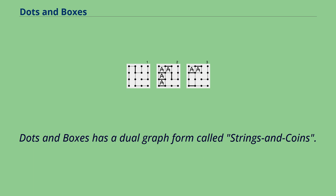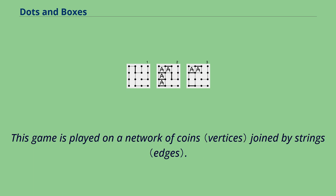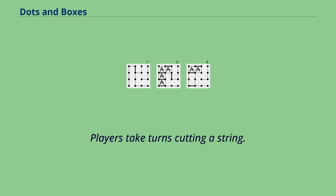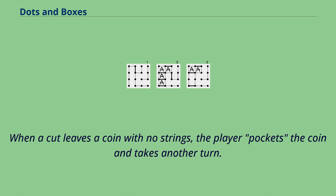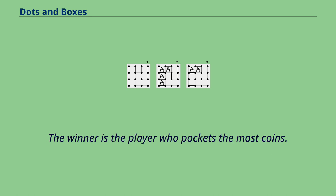Dots and boxes has a dual graph form called strings and coins. This game is played on a network of coins joined by strings. Players take turns cutting a string. When a cut leaves a coin with no strings, the player pockets the coin and takes another turn. The winner is the player who pockets the most coins. Strings and coins can be played on an arbitrary graph.